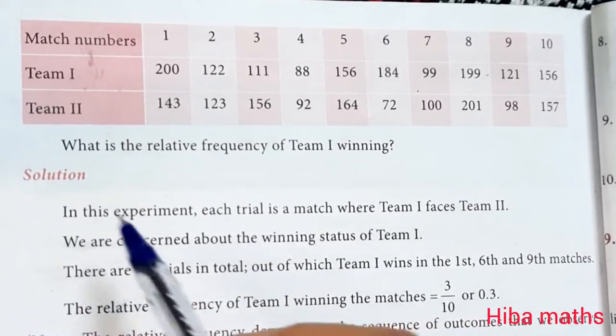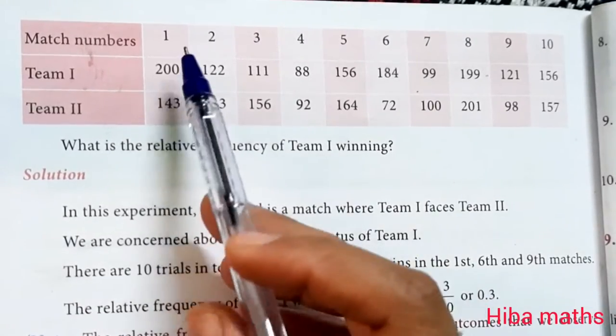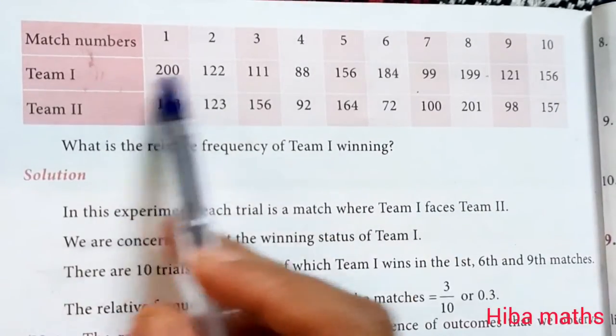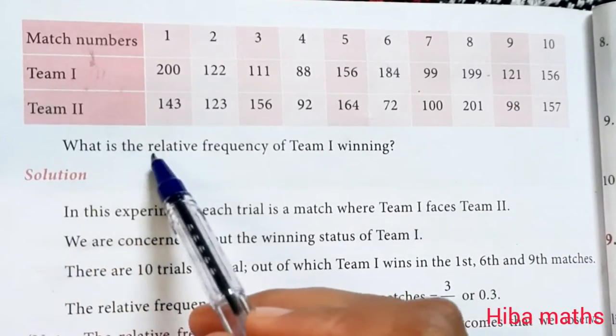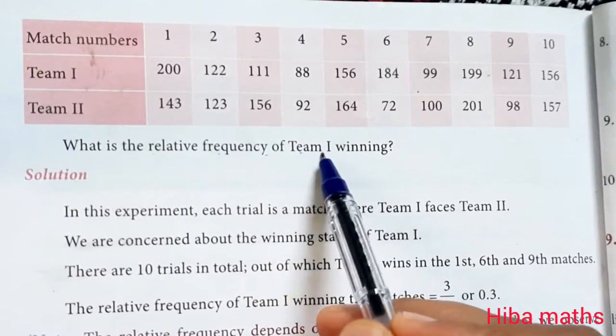So if you look at the table, column number shows matches played, 1 through 10. Team 1 scores and Team 2 scores are listed. What is the relative frequency of Team 1 winning?